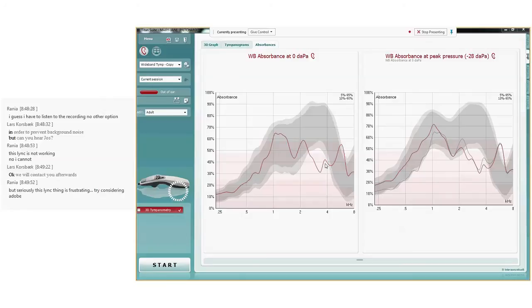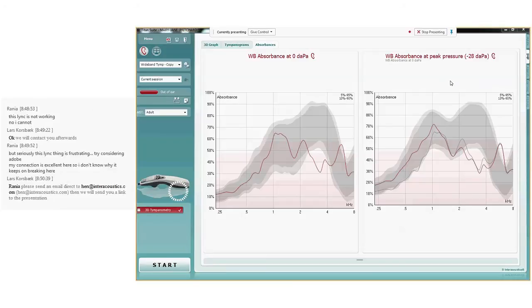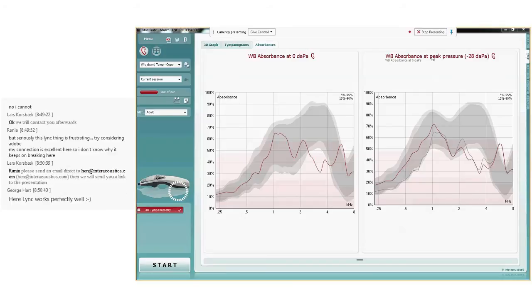And then, very important, don't look at the absorbance graph by itself. Look at which pressure is it obtained. Where is the peak pressure? If you see an abnormal absorbance, but the peak pressure is close to zero, then maybe, depending on the shape, it will indicate that it is related to otosclerosis. But is your peak pressure far from zero? Then it could be a more commonly negative middle ear pressure, or it could be related to fluids. And so combining the peak pressure with the graph is very important.